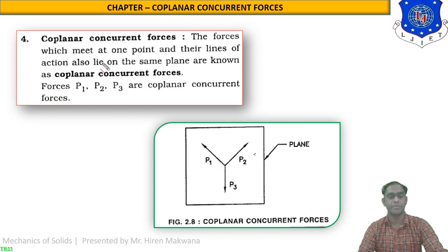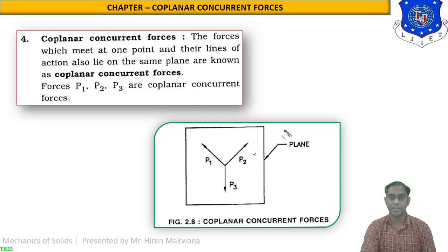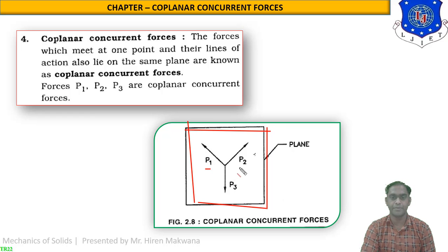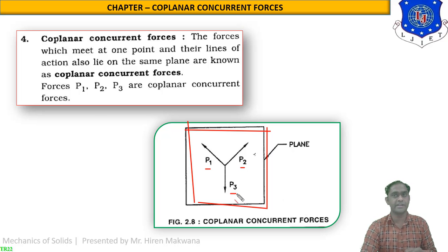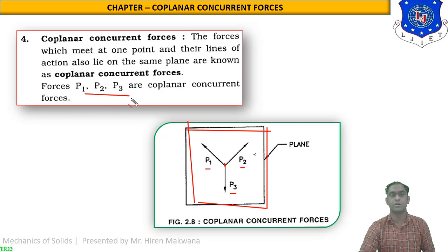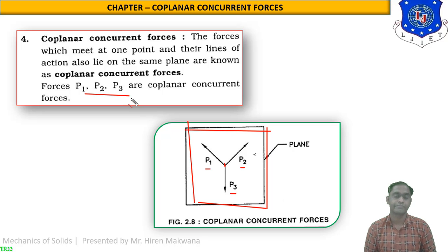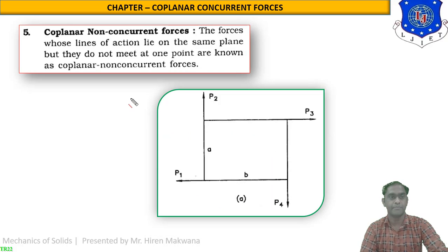Number four is co-planar concurrent forces — a combination of the first and second types. In the rectangular plane, three forces P1, P2, and P3 are lying, making them co-planar. But these three forces are also concurrent because they intersect at a common point. So P1, P2, and P3 are co-planar concurrent forces.